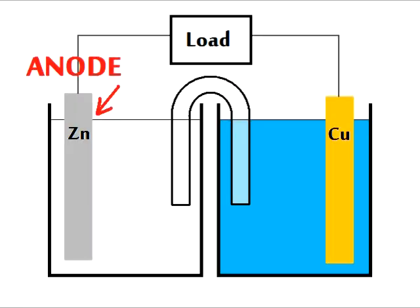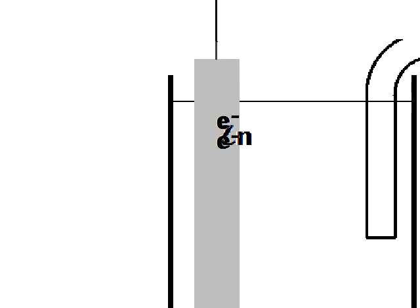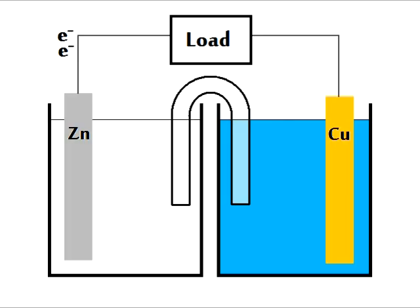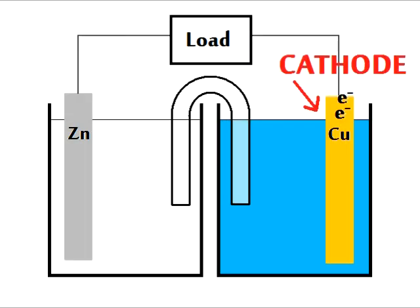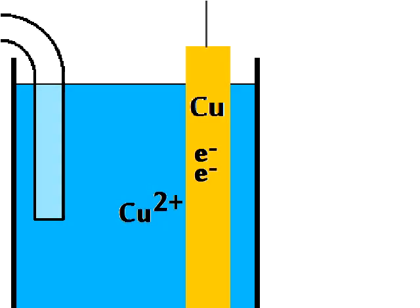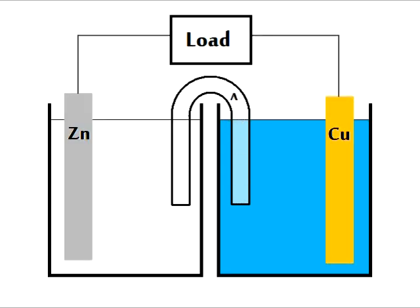We start at the anode, electrons are lost there, and go through the wire and through the load on fire. They enter the cathode and reduce the cations, and the anions go through the salt bridge back to where? Where?